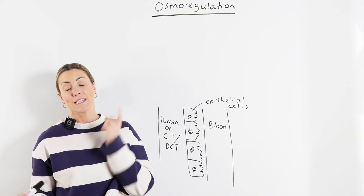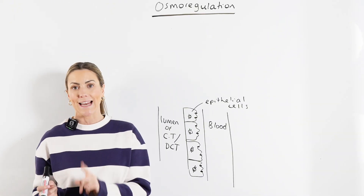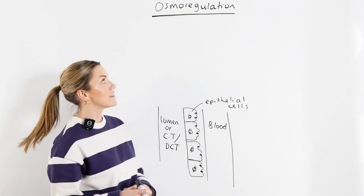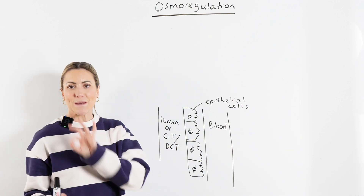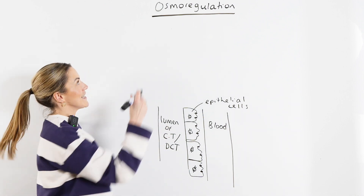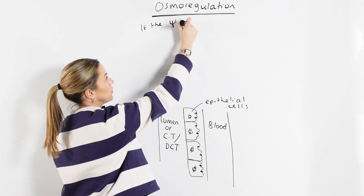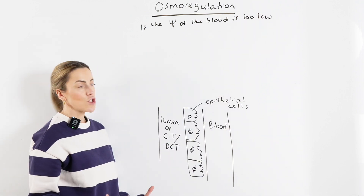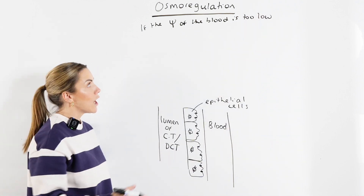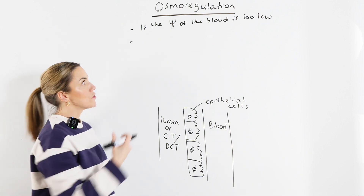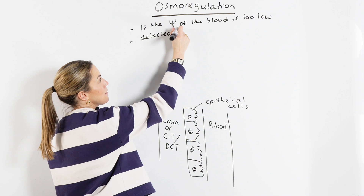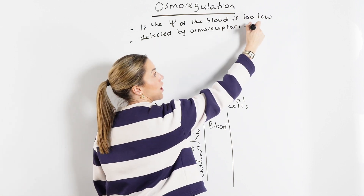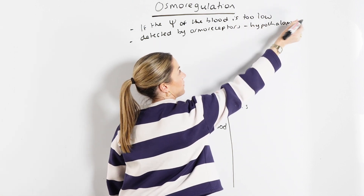Let's explain osmoregulation. This is right at the end of module six for AQA A-level biology, but it's also needed for those studying OCR biology, and we're going to go into sufficient detail for both. So, osmoregulation. Let's start with the brain. If the water potential of the blood is too low — so the blood is too concentrated — what is going to detect that decrease in water potential? It's going to be detected by osmoreceptors, and osmoreceptors are found in the hypothalamus in the brain.